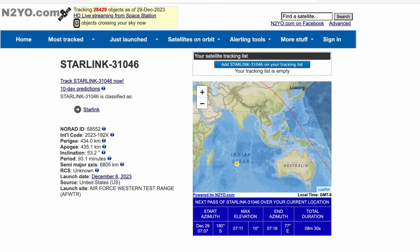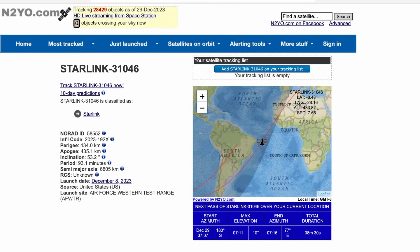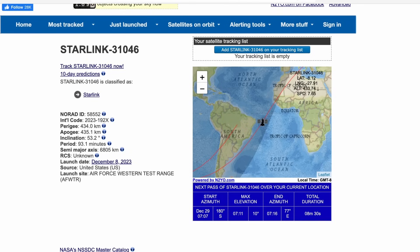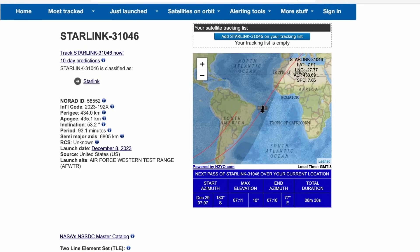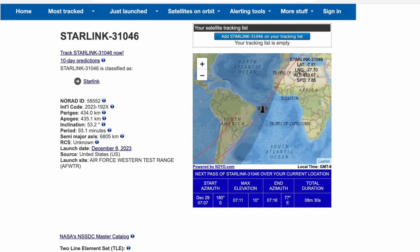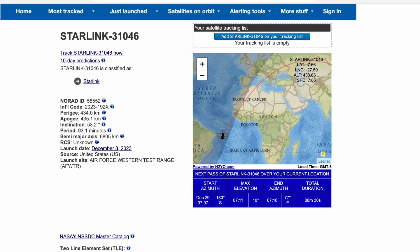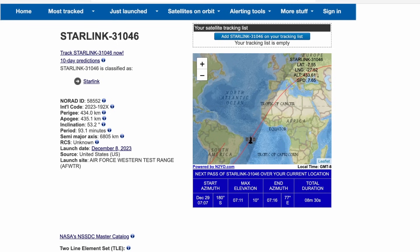This includes its NORAD ID, international code, some of its Keplerian element characteristics such as the Perigee and Apogee, its launch date and the launch site, as well as the general ground track of the satellite relative to my location, as well as pass information and characteristics of the pass of the satellite.